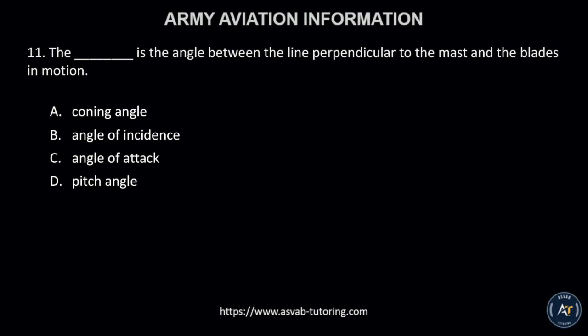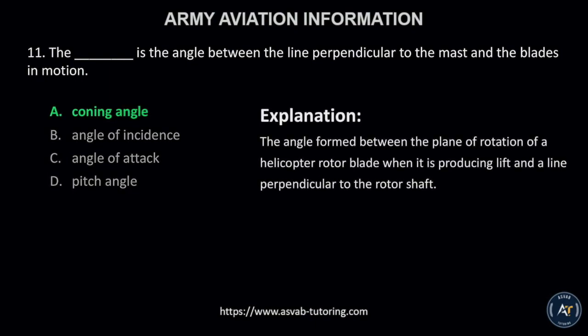Number 11. The blank is the angle between the line perpendicular to the mast and the blades in motion. A, coning angle; B, angle of incidence; C, angle of attack; or D, pitch angle? The correct answer is letter A, coning angle. The coning angle is the angle formed between the plane of rotation of a helicopter rotor blade when it is producing lift and a line perpendicular to the rotor shaft.